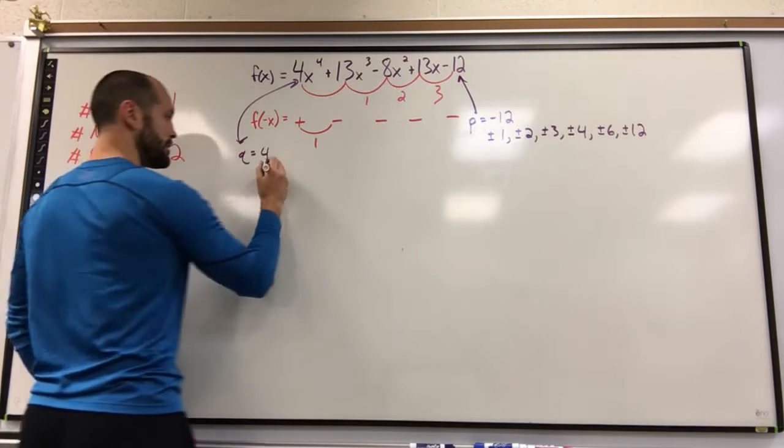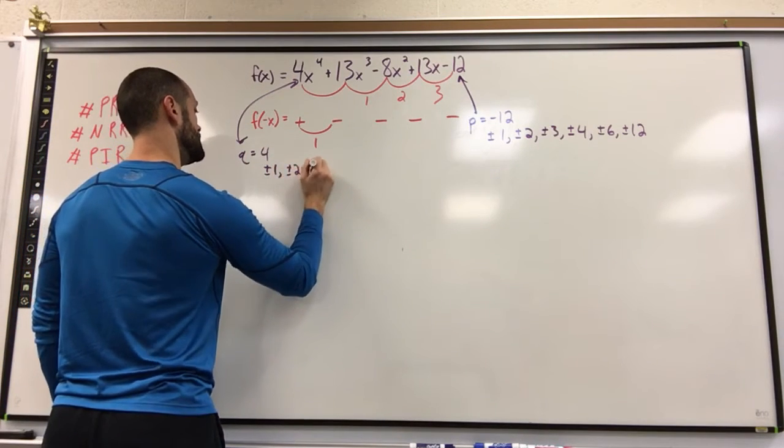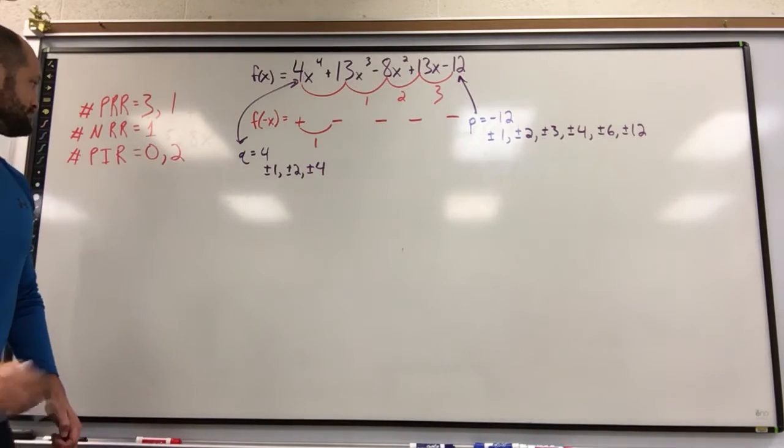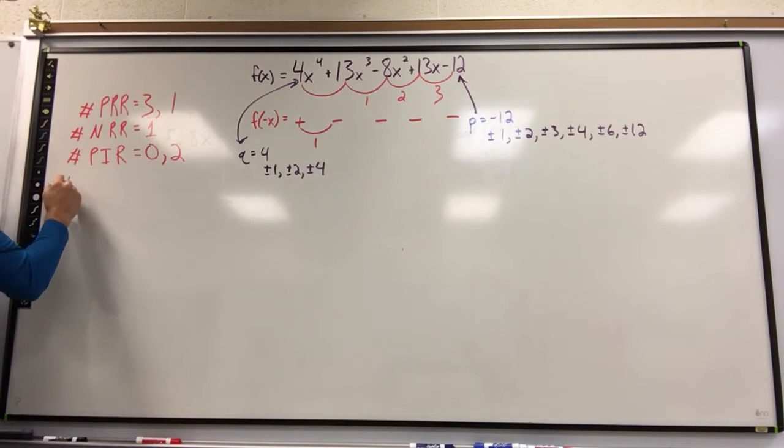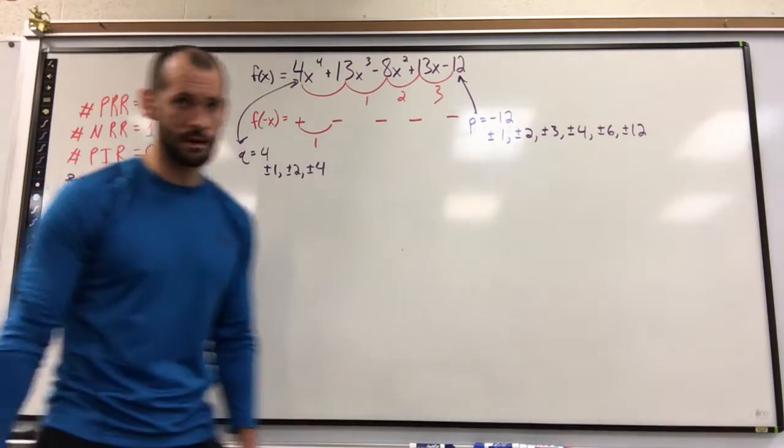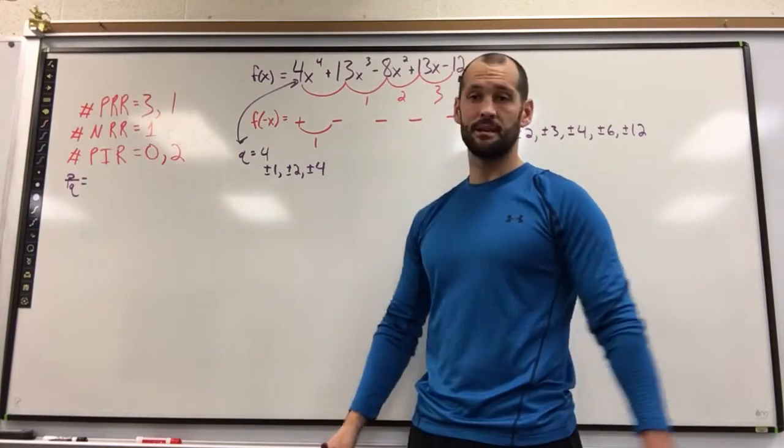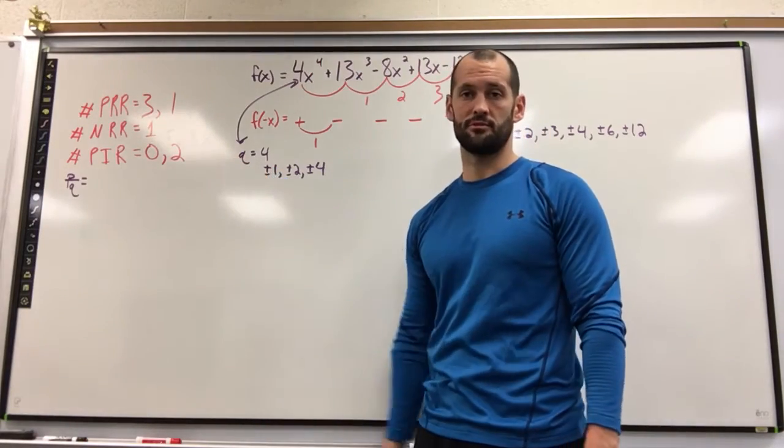Factors of 4, plus or minus 1, plus or minus 2, plus or minus 4. Now my potential solutions, my potential roots, my potential zeros, my potential x-intercepts, those are all synonymous, is any combination of a factor of P over a factor of Q.